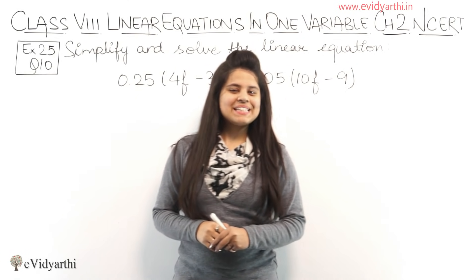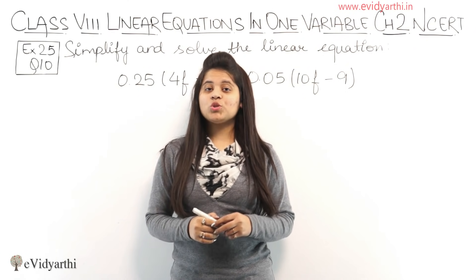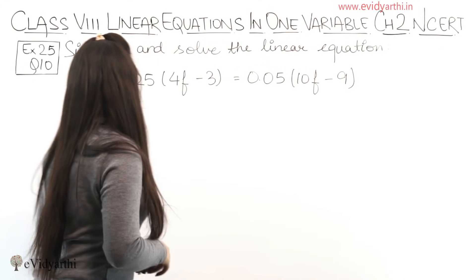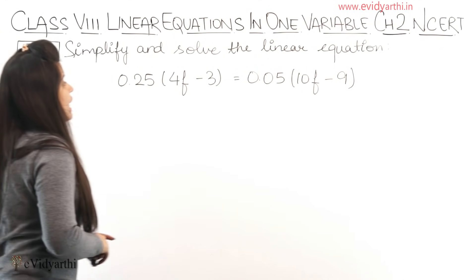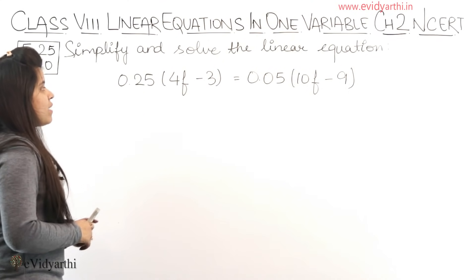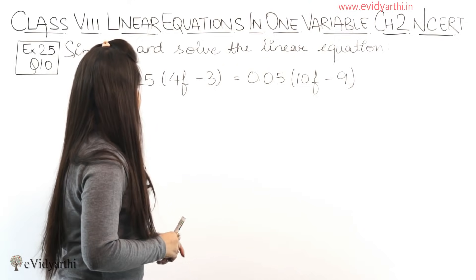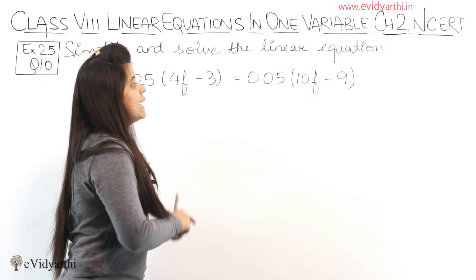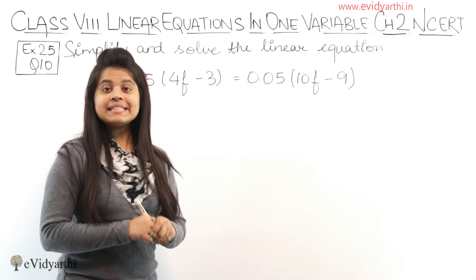Hello everyone, this is Mansi from eVidyarthi.in. Coming to question number 10, exercise 2.5. In this question we have to simplify and solve the linear equation: 0.25 in bracket 4f minus 3 equals to 0.05 in bracket 10f minus 9.